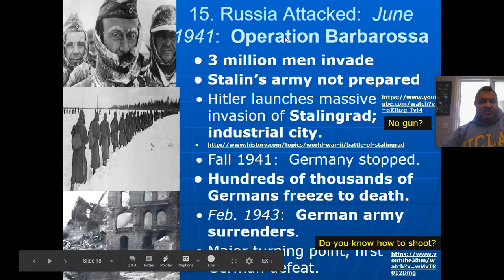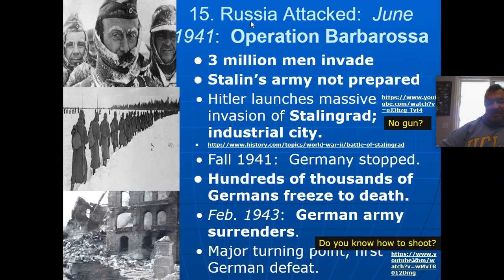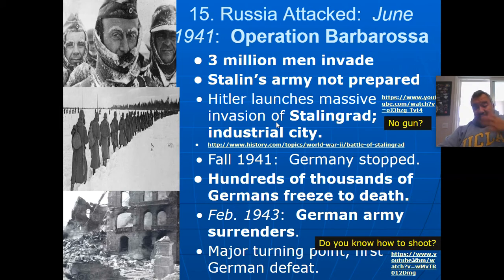On to Russia — June 1941. If the Nazis had stopped and not attacked the Soviets, who knows — we could still be controlled by the Nazis today. But they didn't stop. Three million men invaded. Stalin's army was not prepared and got pushed back. Hitler launched a massive attack on Moscow, Stalingrad, and Leningrad — formerly St. Petersburg. Stalingrad was a major industrial city, and behind it were the oil fields the Germans really wanted.